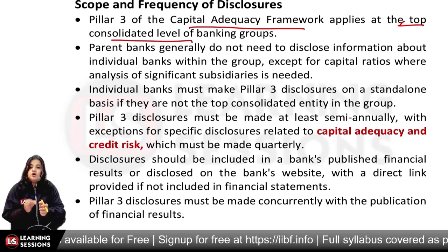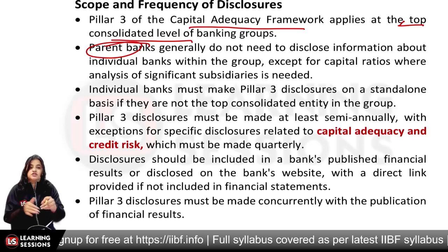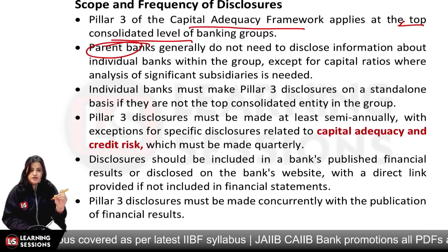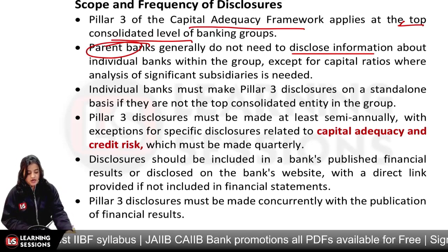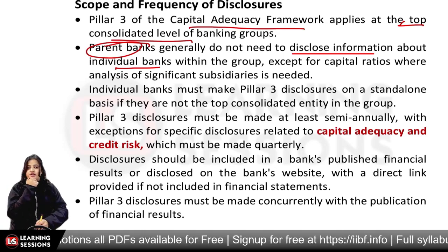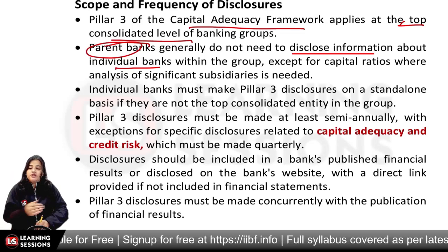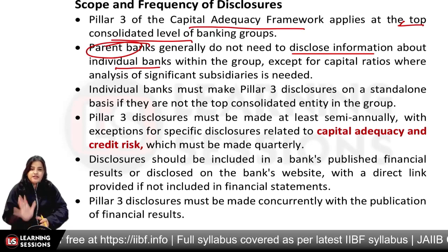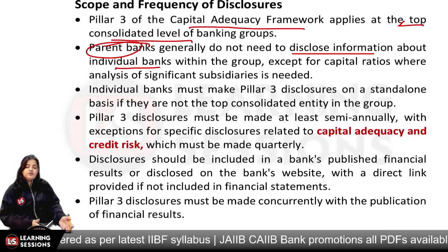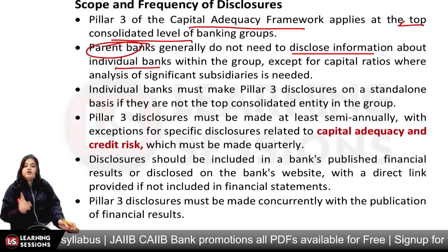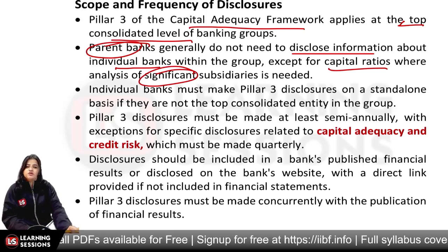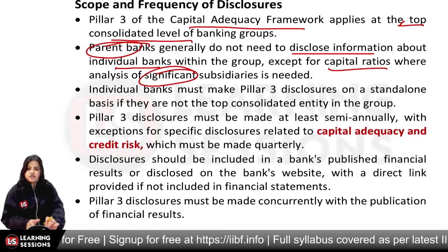Pillar 3 disclosures need to be followed at the top consolidated level of the banking group. What do we need to do? We need to give disclosures about individual banks in the group. Because the parent bank consolidates financial statements, if the parent bank disclosed details for each subsidiary, the financial statements would become very large. So individual banks, which are subsidiaries, will disclose their information per Pillar 3 requirements according to the parent bank.